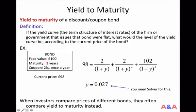Today we study how to compute yield to maturity for coupon bonds. It's a good idea to start with a simple numerical example before seeing the definition. Consider the following coupon bond with face value £100 and time to maturity 3 years. The coupon rate is 2% and the coupon payment is once a year.